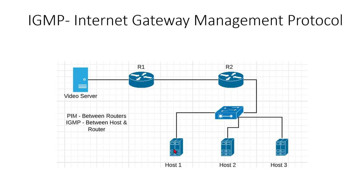This is how communication happens in IGMP version one, but the issue is that when a host doesn't want to receive the traffic anymore it doesn't inform the router. For example, the host sent a membership report, the router started sending traffic, then the router sent a periodic query and the host replied yes. But suddenly after five seconds, the host no longer wants to receive multicast traffic — it doesn't inform the router. So the router keeps sending traffic for the full 60 seconds until the next periodic message. When it doesn't receive a response, it stops the traffic.